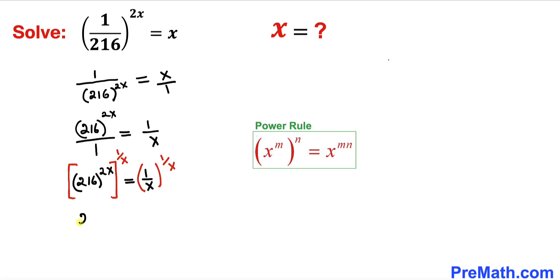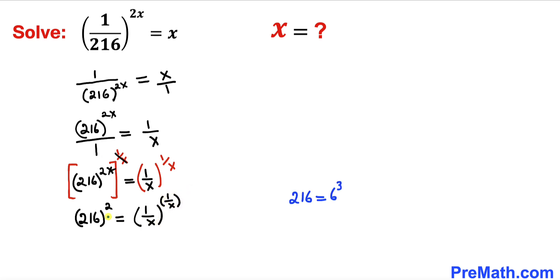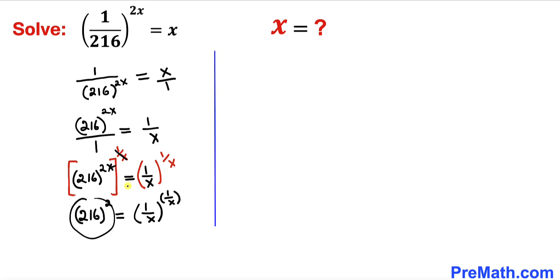The left-hand side becomes 216, and x and 1/x cancel out, so we get 216^2 = (1/x)^(1/x). Now focusing on the base 216: 216 can be written as 6³, so I replace 216 with 6³. The left-hand side becomes (6³)^2 = (1/x)^(1/x).